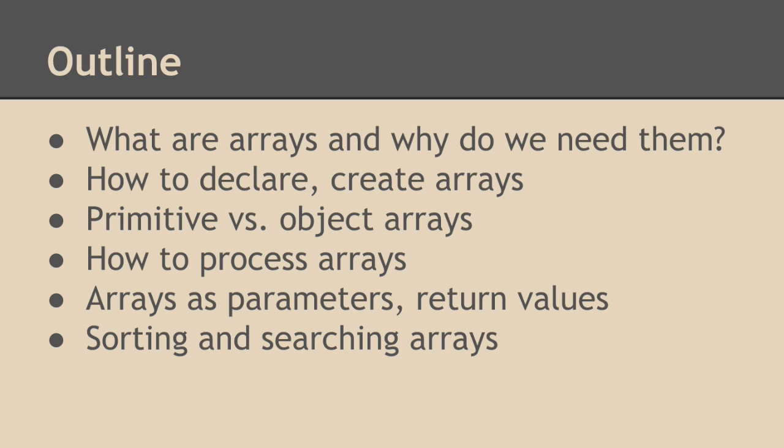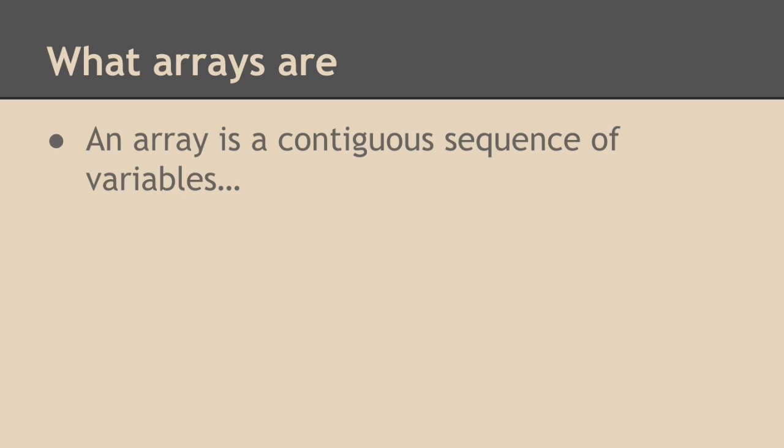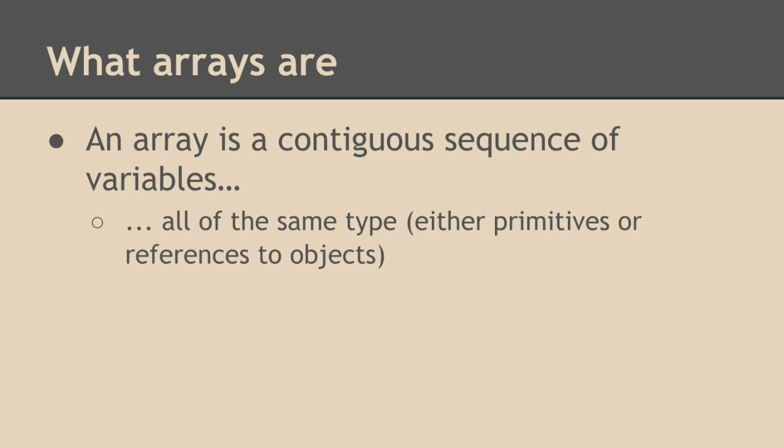So let's begin with what arrays are and why we need them. An array is a contiguous sequence of variables or storage locations that are all of the same type. They're either all the same primitive type, like they're all ints or they're all floats, or they're all references to objects of some sort.